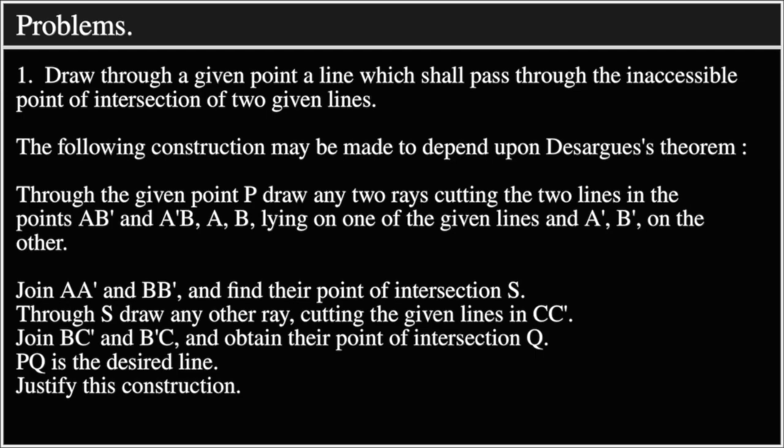Through S draw any other ray cutting the given lines in CC'. Join BC' and B'C and obtain their point of intersection Q. PQ is the desired line.